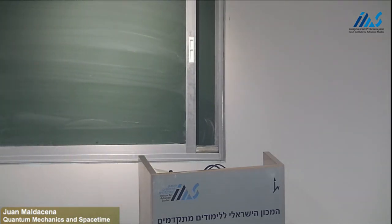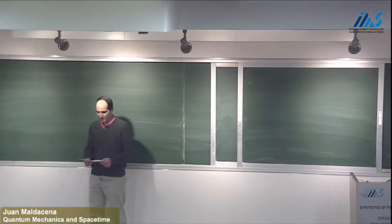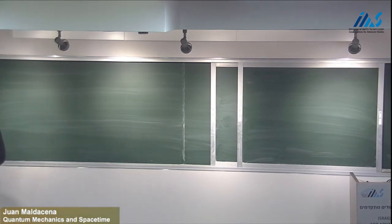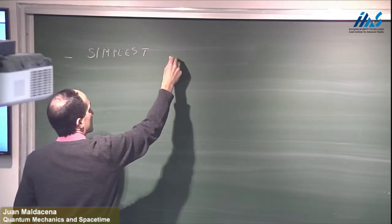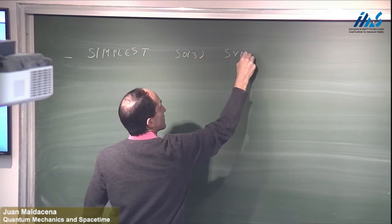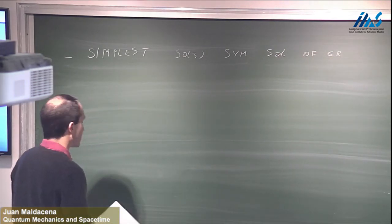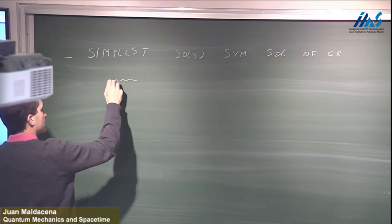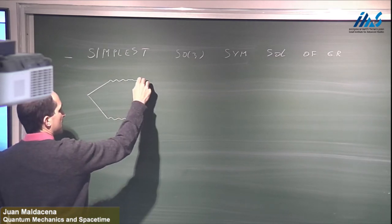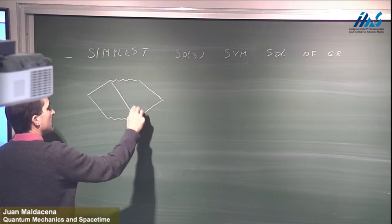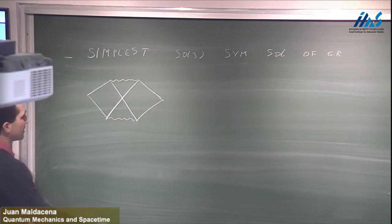Today we will talk about ER equal to EPR, wormholes, and what it can say about the AMPS paradox. Let's start with the simplest spherically symmetric solution of general relativity — essentially the Schwarzschild solution. This is the simplest solution of vacuum Einstein's equations, and this solution has a Penrose diagram of a particular form.